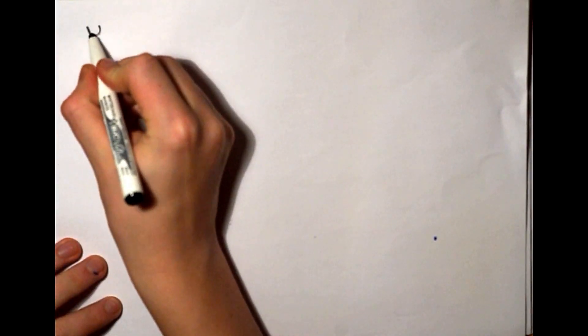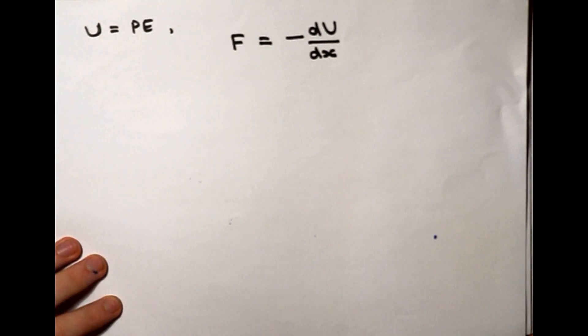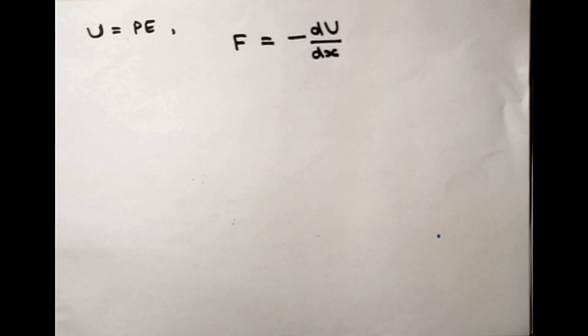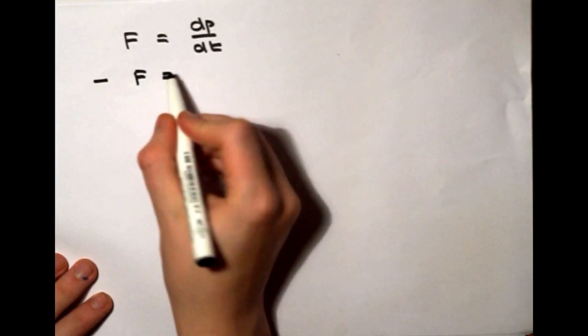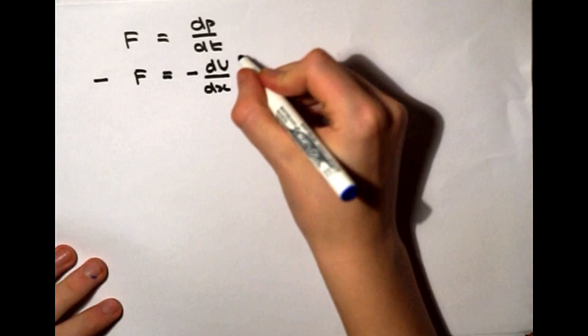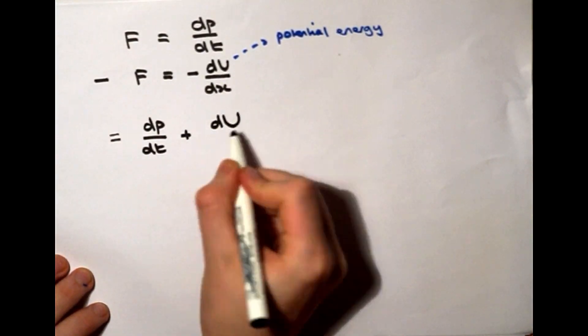Using the conventional U as the symbol for potential energy, we write that F equals minus dU over dx for a conservative force. Now if we take the equation for Newton's second law and we subtract our new equation for force, we get that dp over dt plus dU over dx is equal to zero.